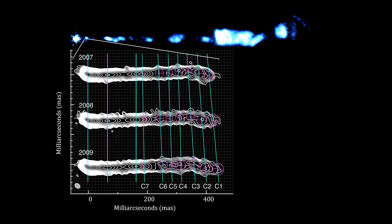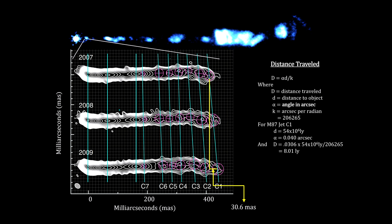They found that one of the components moved 30 milli-arcseconds over two years. That's a very tiny amount, but when you multiply it by the large distance to M87, we find that the distance traveled was eight light years. To travel eight light years in just two years means its velocity is four times the speed of light. We call the apparent velocities greater than the speed of light superluminal motion.